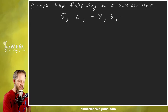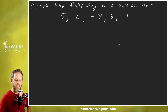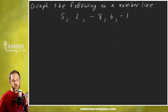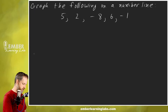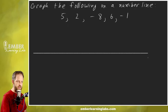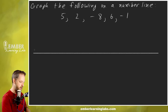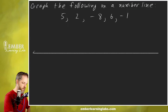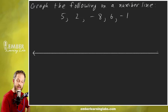The first thing we need to do is use our straight edge to draw a straight line. I have the ability to do it on the computer; you can pull out a straight edge and do it that way. We put arrows at the end of the line — the arrows represent that the line goes on forever.